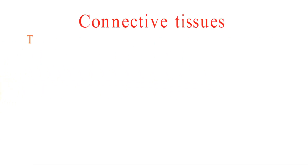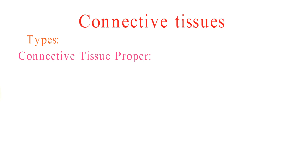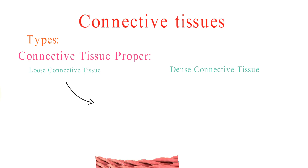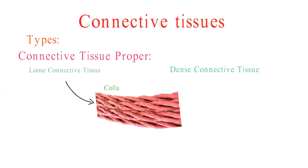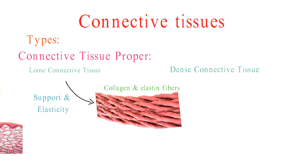First, let's break down the different types of connective tissues. We have connective tissue proper, which includes both loose connective tissue and dense connective tissue. Loose connective tissue contains collagen and elastin fibers, providing support and elasticity.